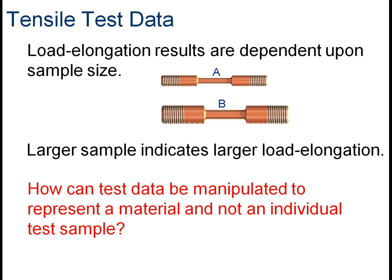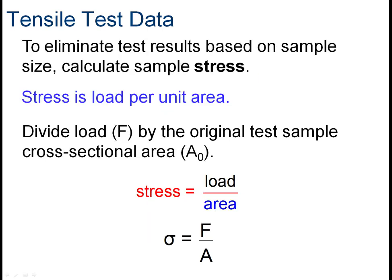The larger sample is going to have a larger load-elongation graph. So how can we standardize the data to represent just the material and not its size? The way we do that is with the term stress. Stress means we adjust the applied force for the cross-sectional area — it's force per unit area. We arrive at stress by dividing the load force by the original test sample cross-sectional area. The units for stress are force divided by area, such as pounds per square inch.